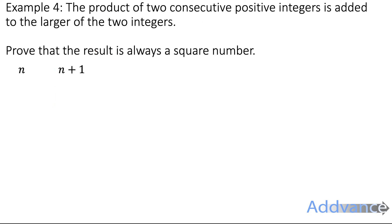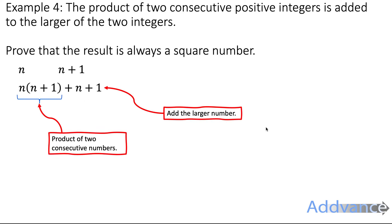So n and n plus 1 are two consecutive positive integers. We're going to multiply them because it says product, and then add it to the larger of the two ones. The larger one is n plus 1. So you take a set of positive integers, and we multiply them, and then add the larger integer. Take a moment to follow what I just did.